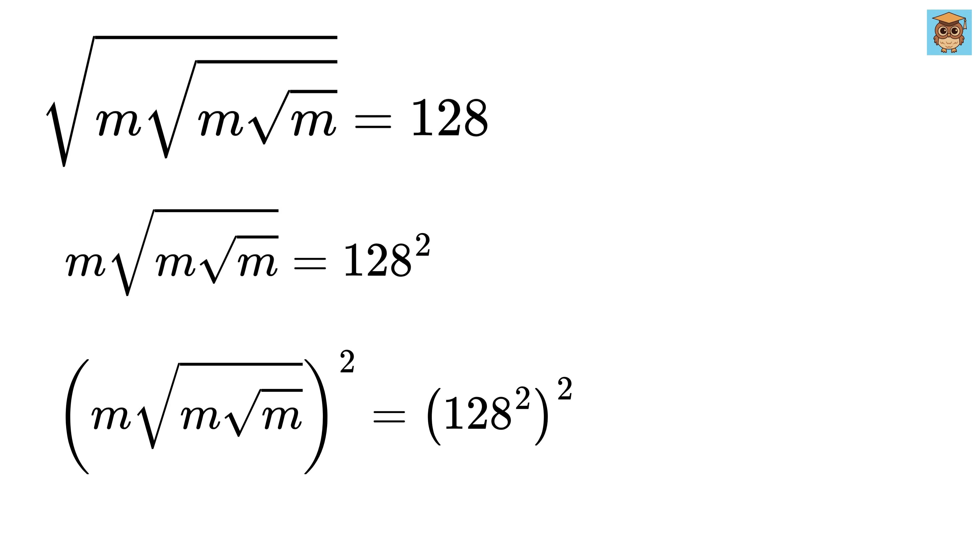Now let us square it one more time. So this will become m square, this square root will be cancelled with this power 2, and we are left with m times under root m, and this equals 128 raised to the power 4.